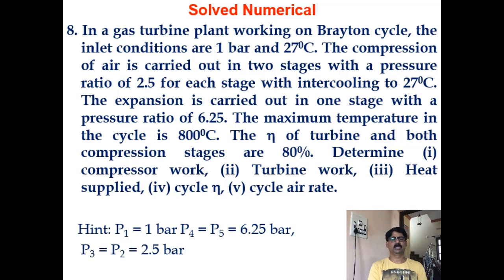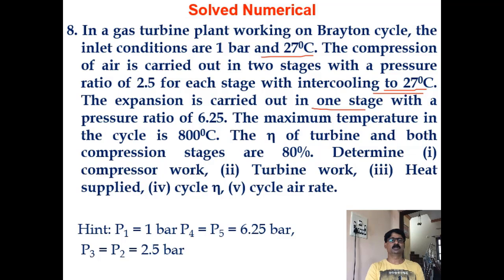Three more problems for you to solve. Problem 1: In a gas turbine plant on a Brayton cycle, inlet conditions are 1 bar and 27°C. Two-stage compression with a pressure ratio of 2.5 per stage with perfect intercooling to 27°C. Expansion is in one stage with pressure ratio 6.25 (= 2.5 × 2.5). Maximum cycle temperature is 800°C. Efficiency of turbine and compressor stages are 80%. Find compressor work, turbine work, heat supplied, cycle efficiency, and air flow rate.